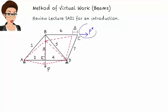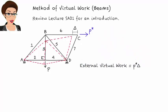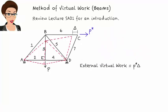Note that the direction of the load corresponds to the direction of the target displacement. If we are seeking to find a horizontal displacement, the virtual load should be horizontal. If we wish to calculate a vertical displacement, the virtual load must be vertical. In this case, external virtual work equals P star times delta.